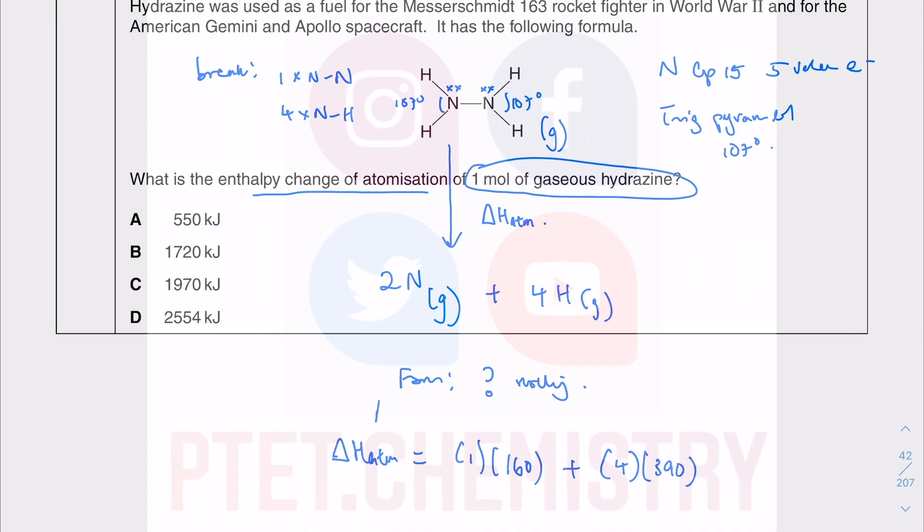So we said that the enthalpy change of reaction is the sum of the bond energy broken minus the sum of the bond energy formed. That will give me plus 1720 kilojoules per mole. It's endothermic, obviously, because you are breaking all the bonds without forming anything. Your calculator will not show you a plus. It's up to you to think about the enthalpy change sign, especially in the theory paper.